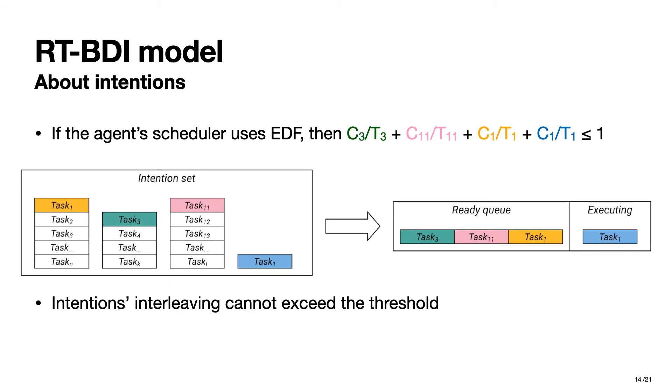going back to the example shown before, by using the EDF schedulability analysis it becomes easy to check if the tasks on top of each intention can be fully executed within their own deadline or not. However, the problem of checking how the intentions interleaving will influence the execution times of the tasks still remains. For instance, in this example,